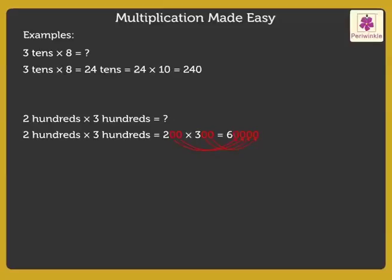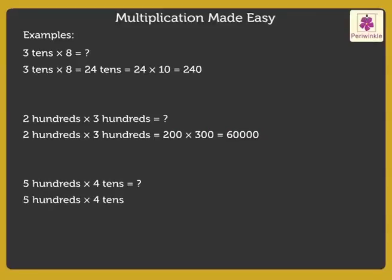Thus, we get the answer as sixty-thousand. Now, let us multiply five-hundred and forty, which is equal to five-hundred into forty. First, multiply the non-zero digits five and four. We get the answer twenty. Lastly, insert three zeros after twenty. Thus, we get the answer as twenty-thousand.